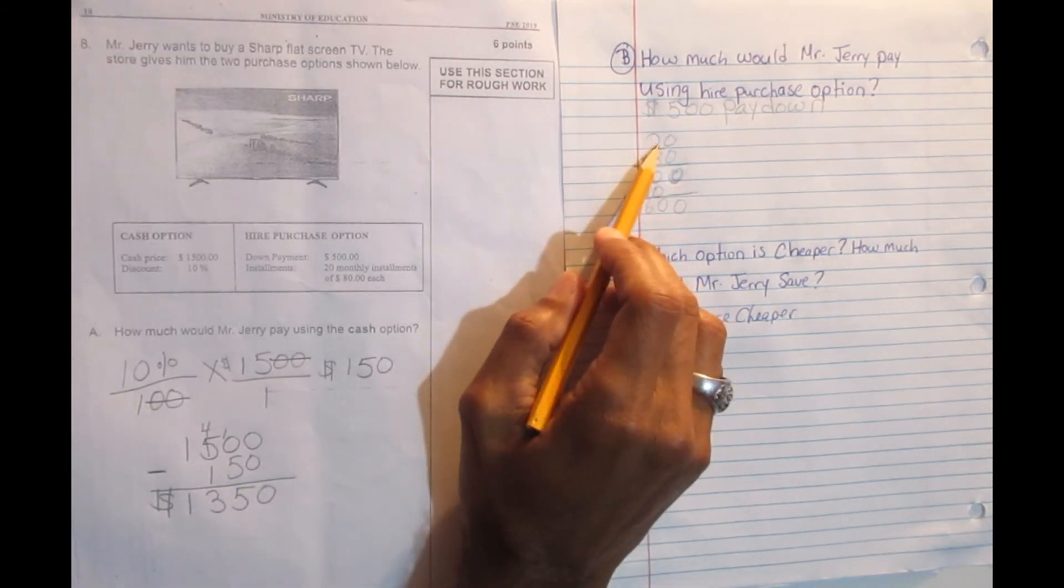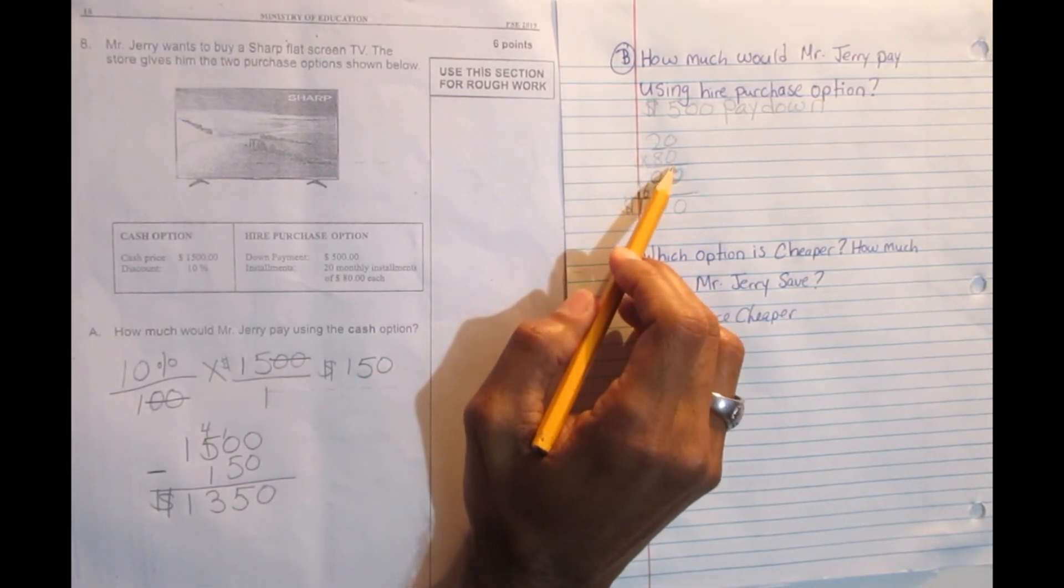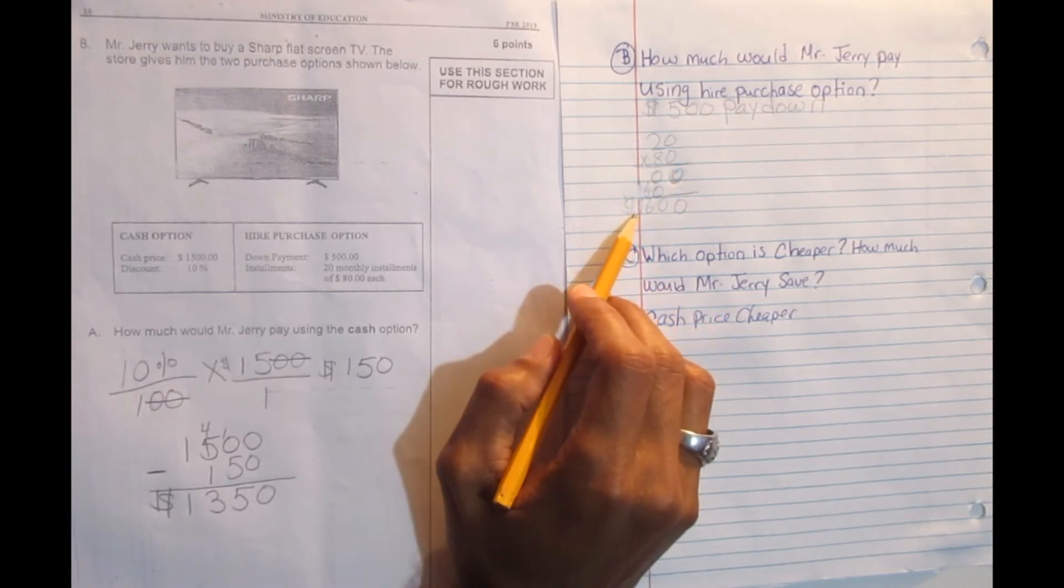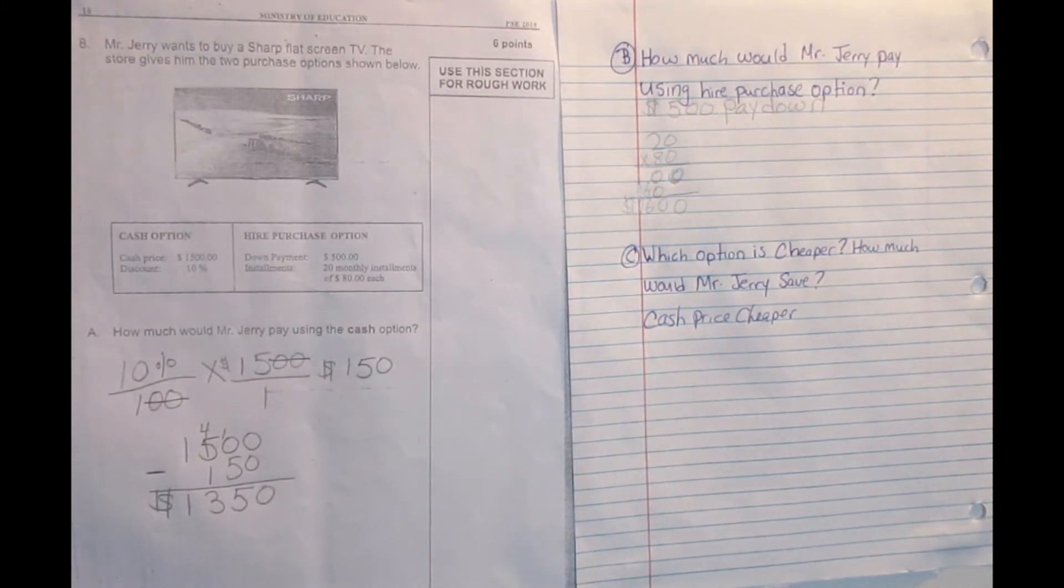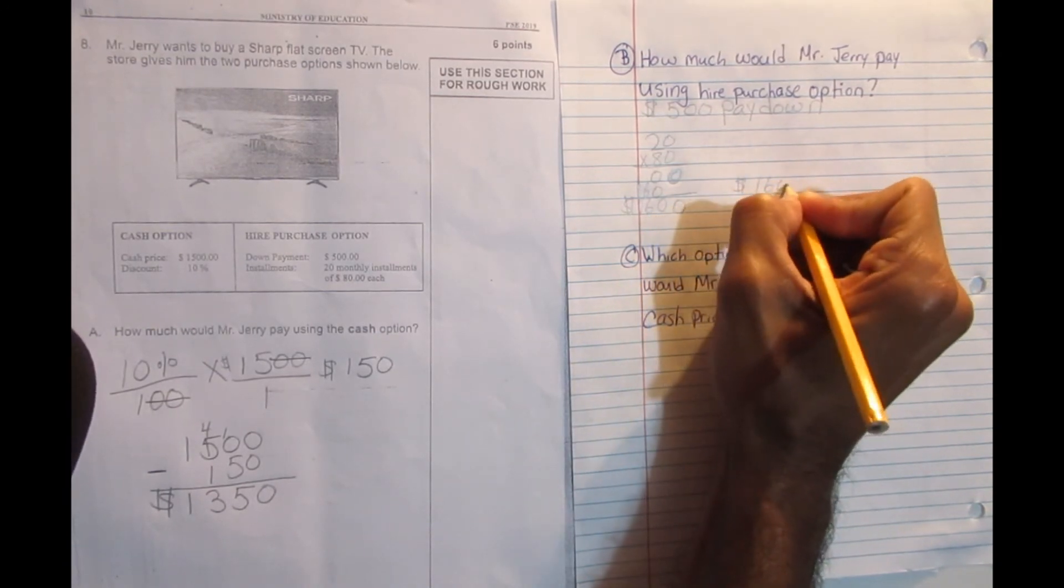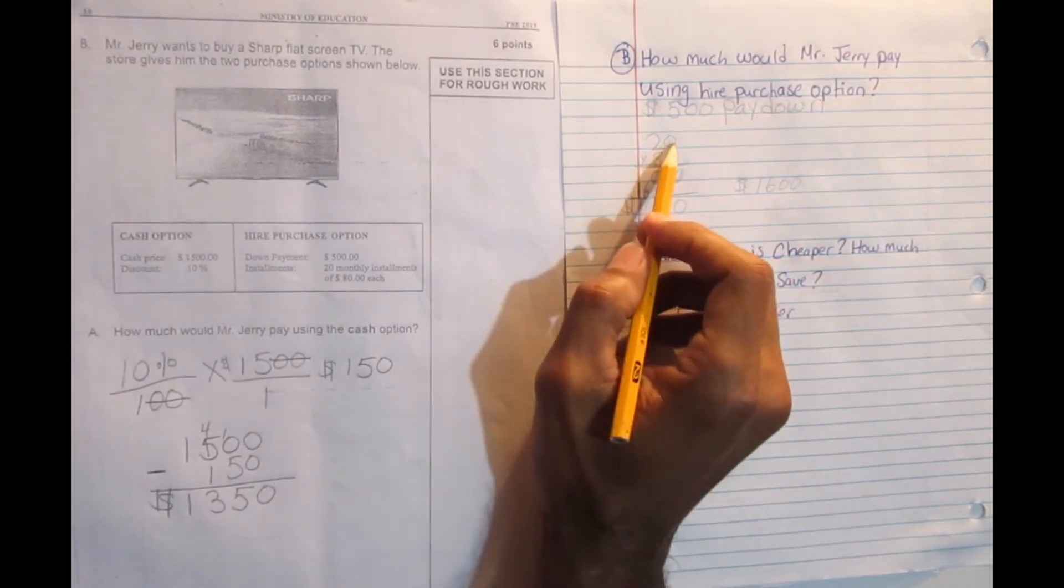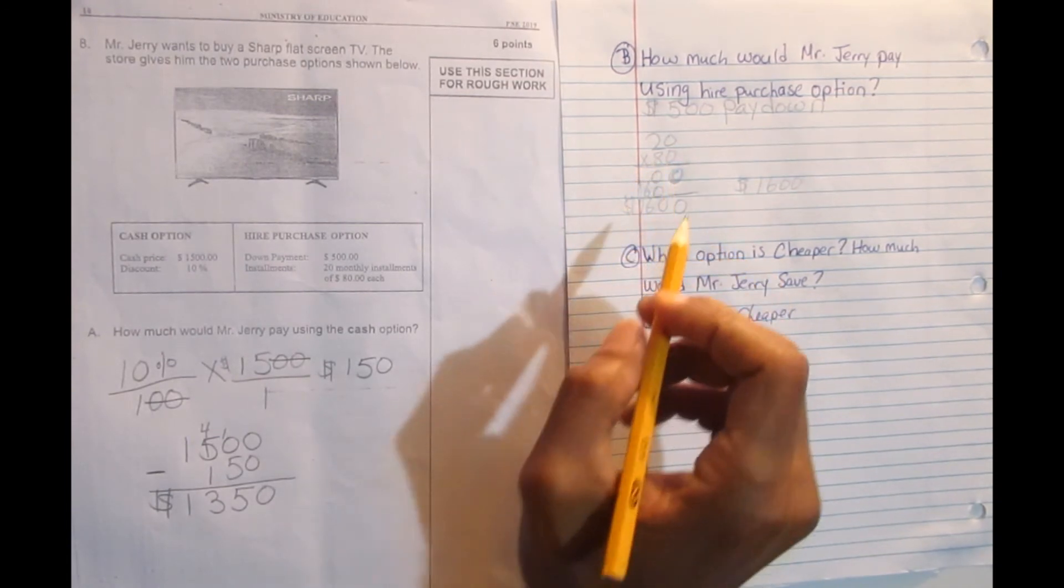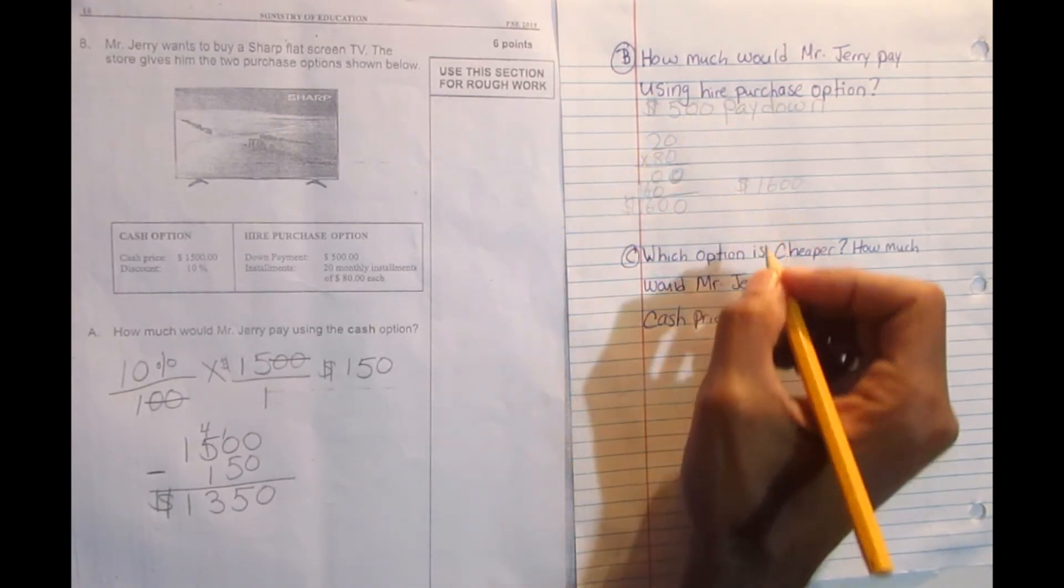So 20 months of $80 for the hire purchase price is $1,600. But remember, that's not the original price yet. $1,600, that's just for the 20 months of $80. But when I got the TV, I paid down $500.